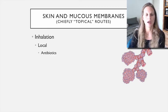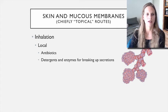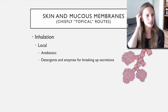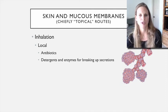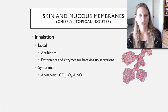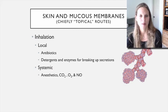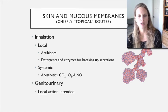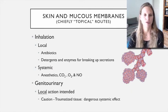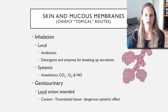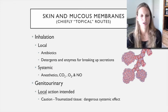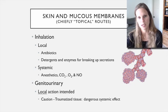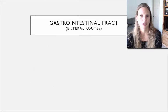For inhalation routes of administration, we can give antibiotics this way, or things that help break up secretions—those would be considered local administration. Inhaled gases include anesthetics, carbon dioxide, oxygen, and nitrous oxide. For mucous membranes of the genitourinary tract, most of the time local action is intended, but anytime you have traumatized tissue, the option for systemic absorption is always there.